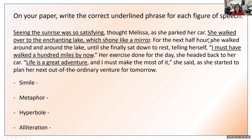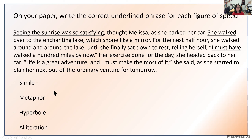Next underlined phrase: 'She walked over to the enchanting lake, which shone like a mirror.' Our three remaining options are hyperbole, metaphor, and simile. It's comparing the lake to a mirror, and gives us the keyword 'like' — the enchanting lake which shone like a mirror. It's not a metaphor because that uses 'is,' and a lake can actually shine like a mirror, so it's not exaggeration. The keyword 'like' tells us this is a simile.